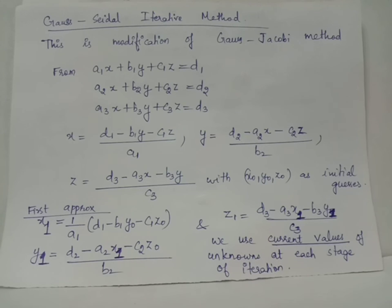x1, the first approximation, is evaluated exactly similar to Jacobi iterative method. We have the formula x1 equals (d1 - b1y0 - c1z0) / a1. Once we have evaluated x1, the value of x gets updated from x0 to x1 using this formula.